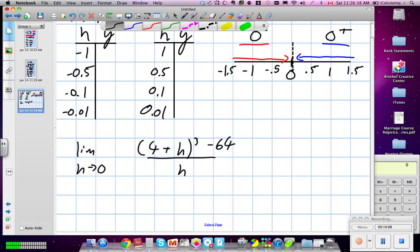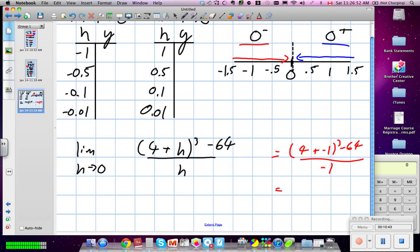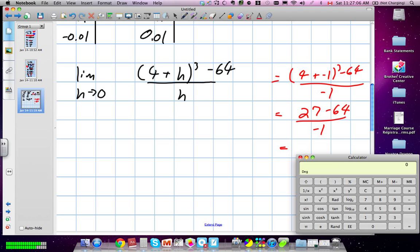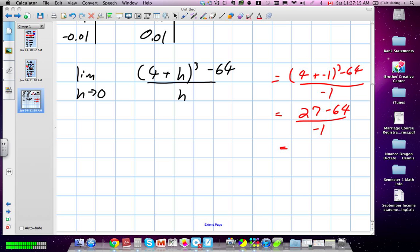Same idea with here. You're going to get closer and closer to a specific number, but we would never find it if we plug 0 in. So that number will essentially be our limit in this question. So we'll go through a couple of these. So first example, what we'll do is we'll take negative 1 and we'll plug it into this equation here. So what that is, is 4 plus negative 1 cubed minus 64 divided by negative 1. This is going to give us 3 cubed. 3 cubed is 27. 27 minus 64 divided by negative 1 is equal to positive 37.